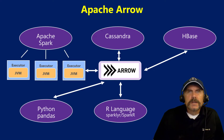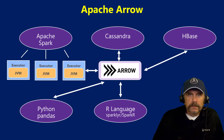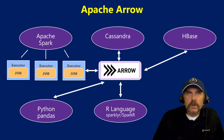Arrow is a very interesting project. What it does is change the format into an extremely efficient column store compressed format — better than the default formats that would typically be used in all these different services, which will all be different. But by giving a common format, it provides a massive speed increase when you need to do work between these different services. So it's a win-win.